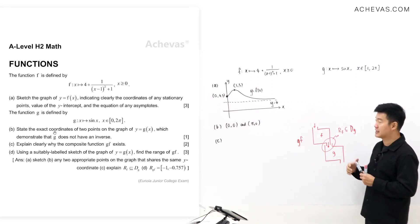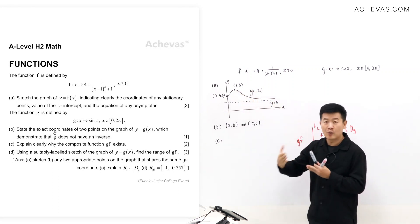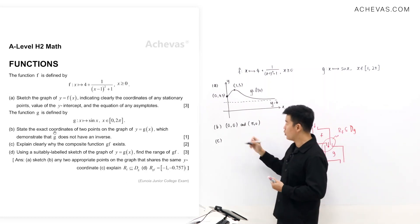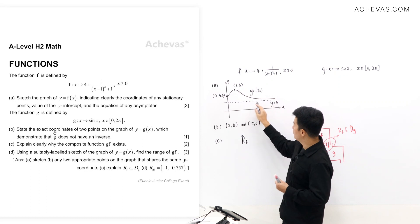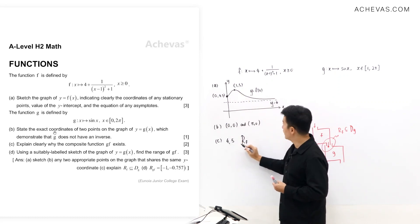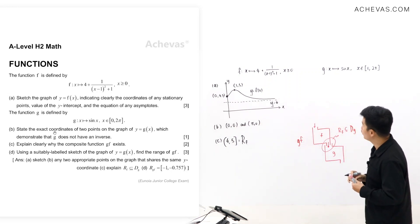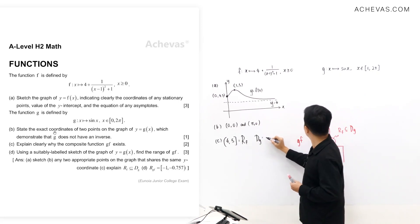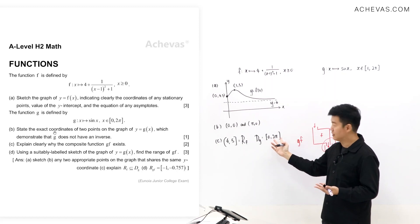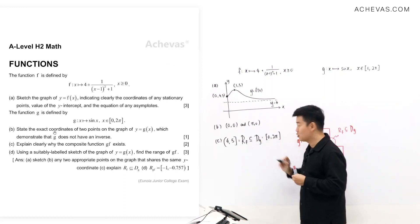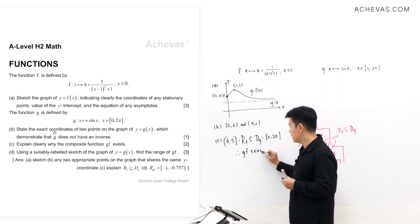The range of f is the set of y-coordinates on the graph of y = f(x), representing all possible outputs from f(x). From the graph, all possible y-coordinates run from 4 up to 5 — not equal to 4, but can equal 5 — so the range of f is (4, 5]. The domain of g, given by the question, is [0, 2π]. From observation, all numbers in (4, 5] lie within [0, 2π], so the range of f is a subset of the domain of g. Therefore, the composite function gf exists.